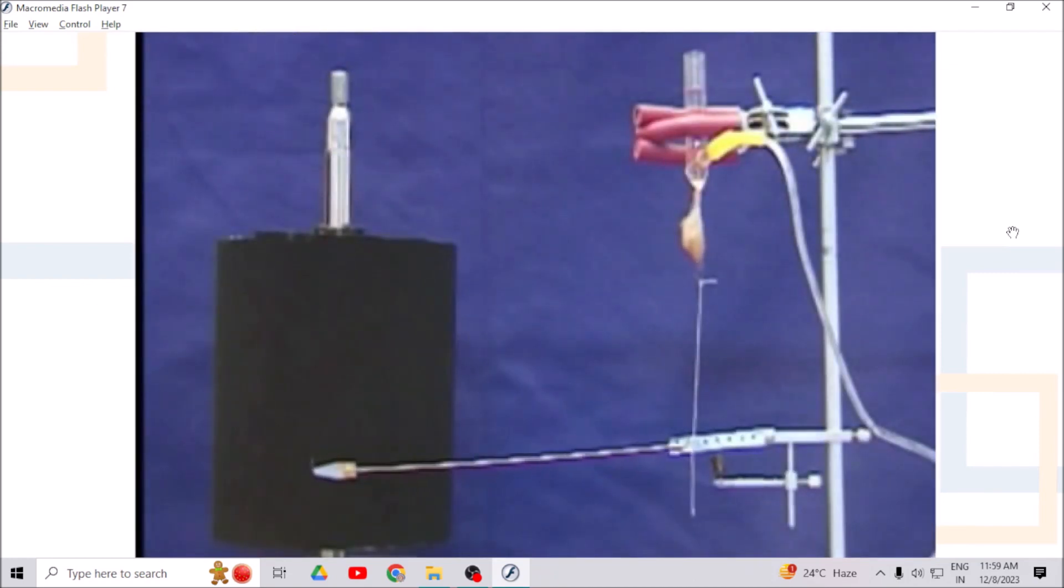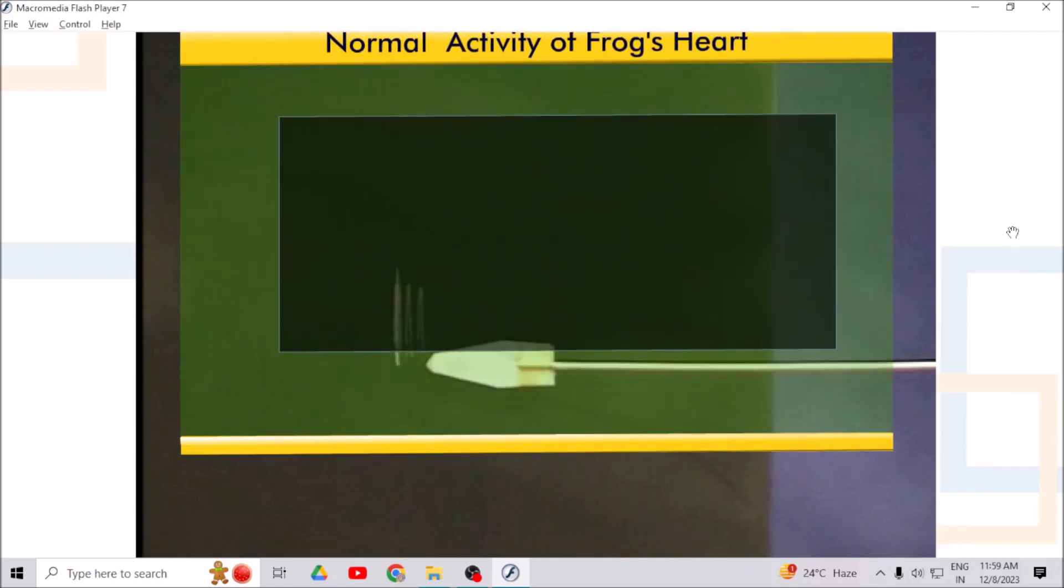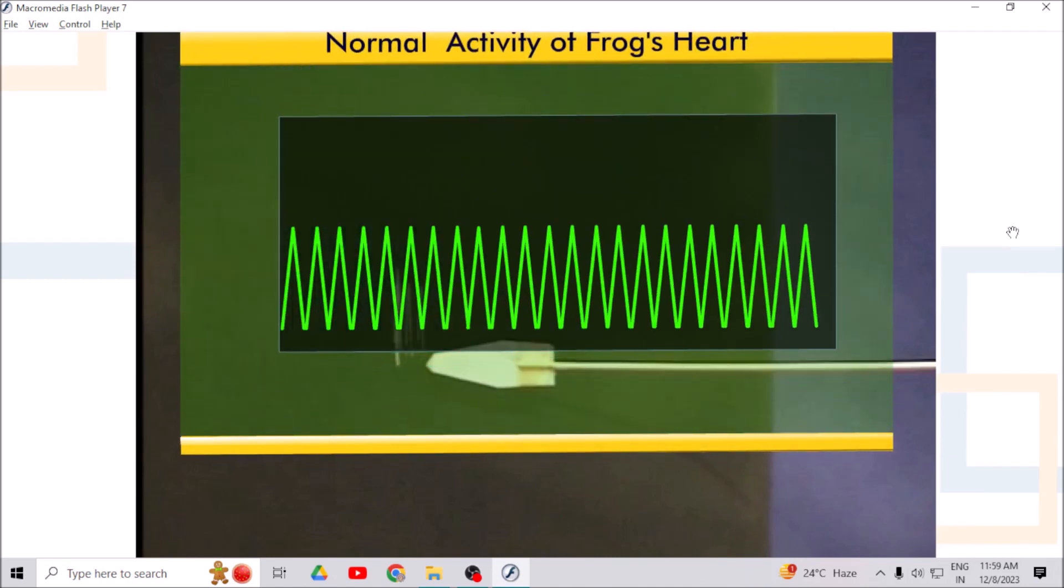Now start the drum and record normal contractions of heart on smoked paper for one minute. From the pattern recorded on the drum you can see contractions of cardiac muscle and relaxation of the same.